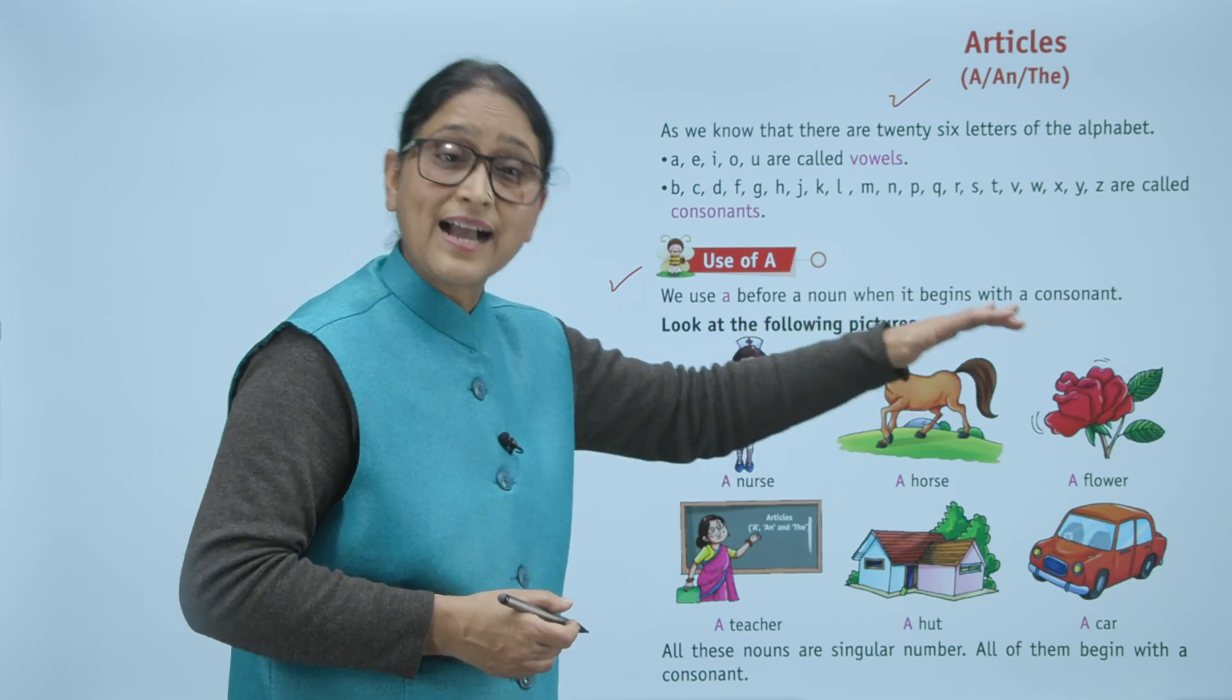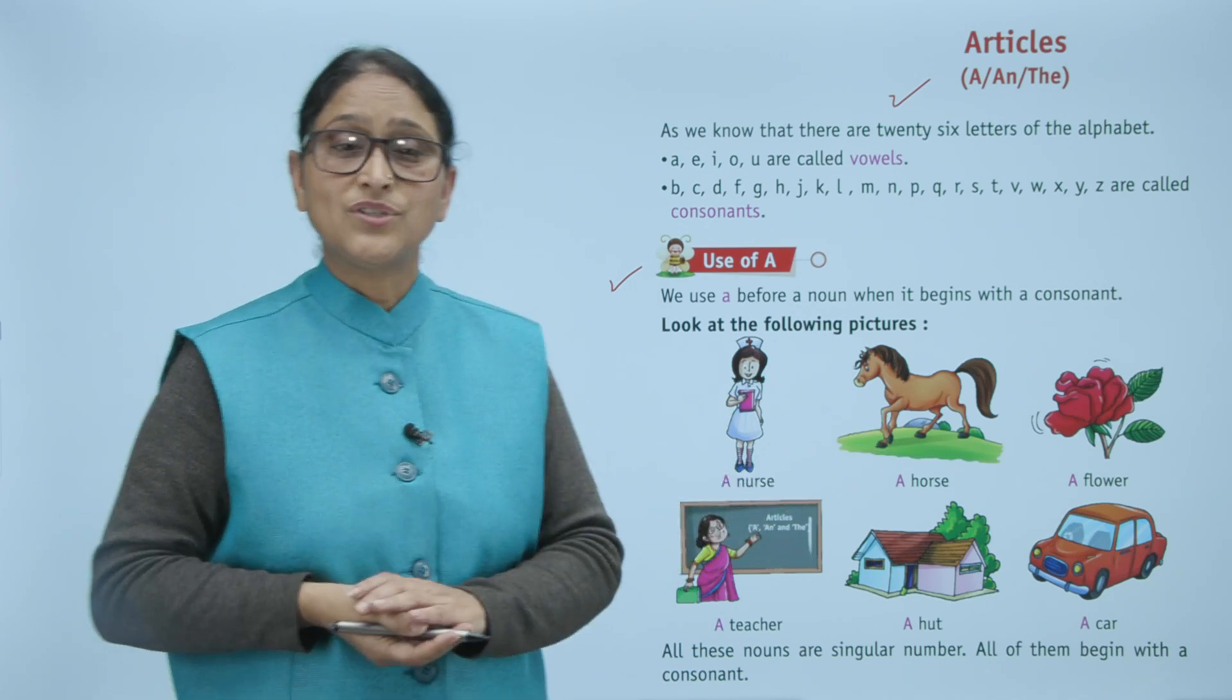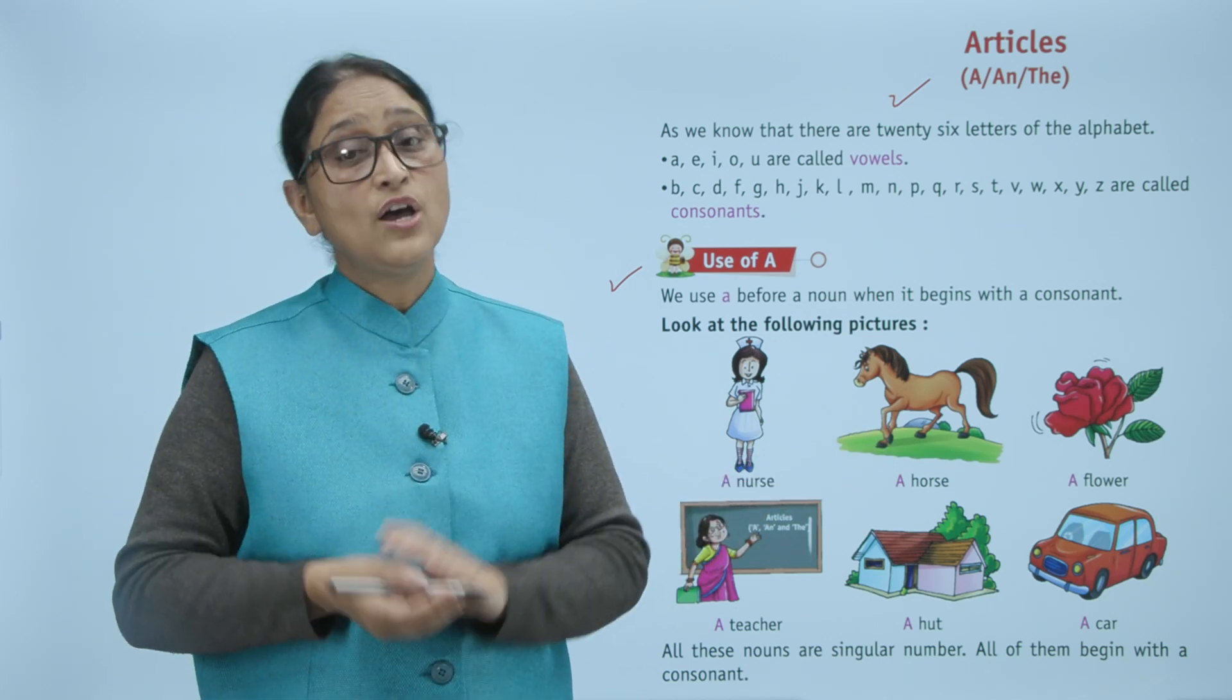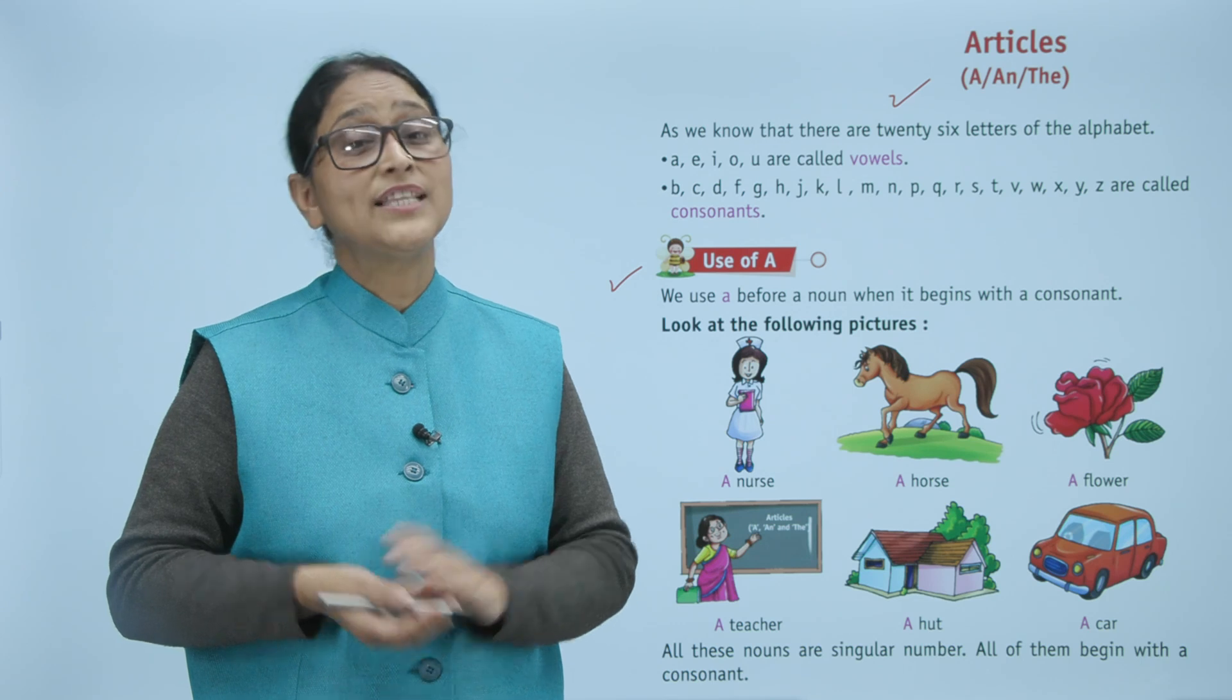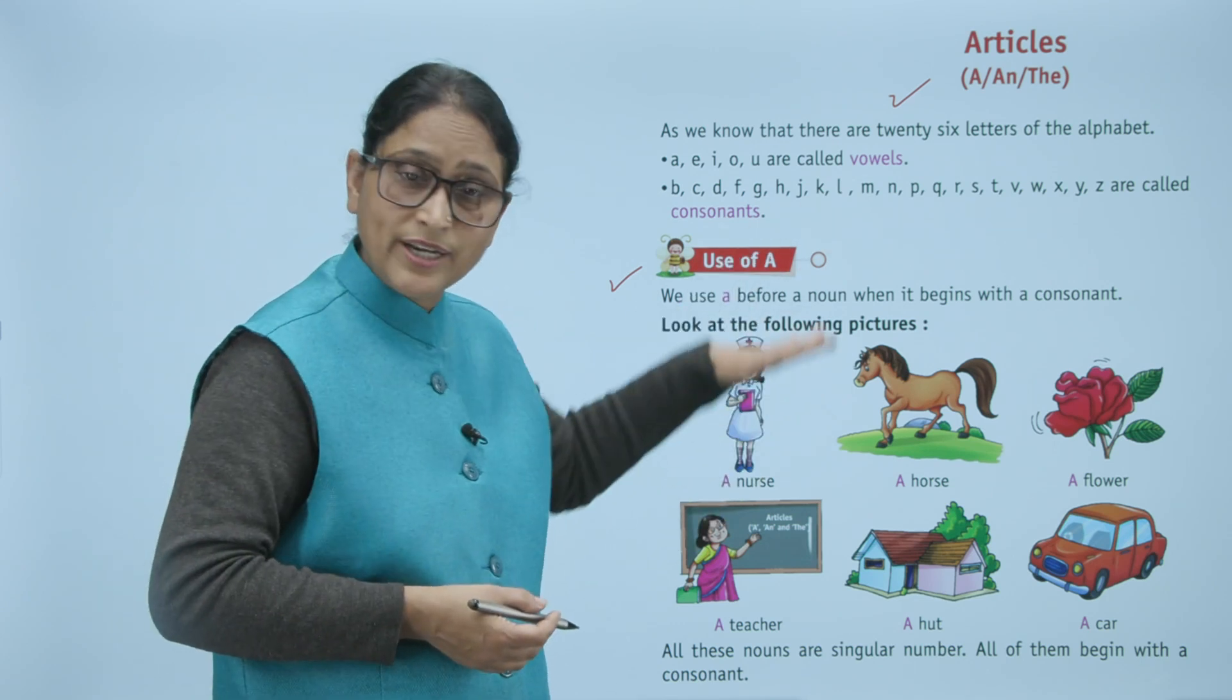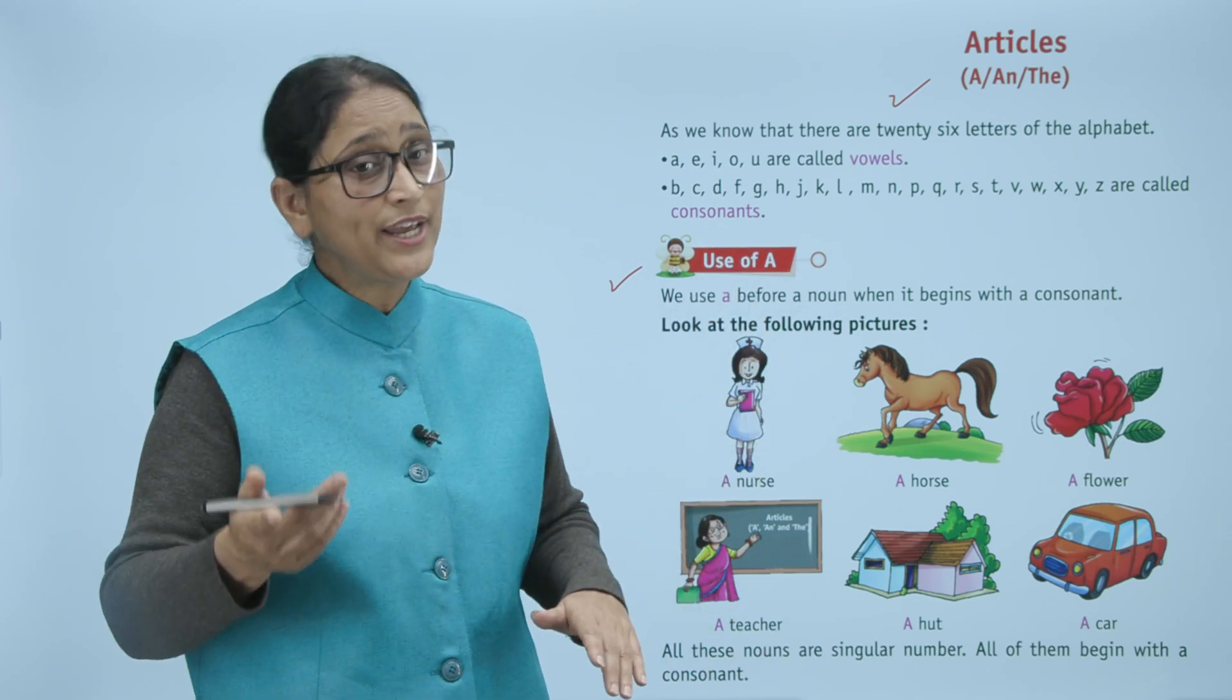All these nouns are singular number. All of them begin with a consonant. Ye sab singular number mein hain aur kis se shuru ho rahe? Consonants se. To hum ne kis ka use kiya? 'A' is mein. Right?